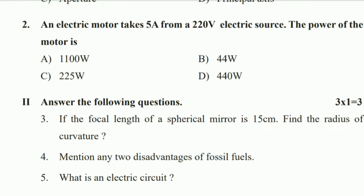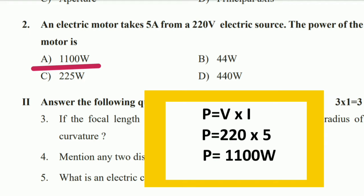Question two: an electric motor takes 5 amperes from a 220-volt electric source. Find the power of the motor. The formula is P = V × I. V is 220 and I is 5 amperes, so P = 220 × 5 = 1100 watts.